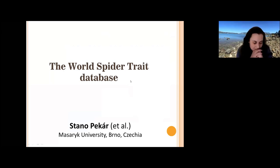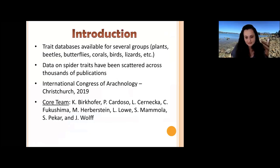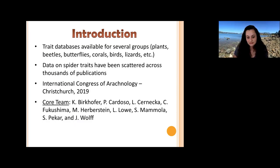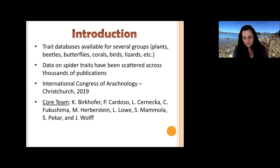With the advent of open science, there has been a growing demand for storing data that we obtain as scientists in a digitalized way. This resulted in the development of several databases — for example, for plants, beetles, and butterflies — which cover a number of traits measured for these organisms. Unfortunately for arachnids, and especially for spiders, no such database has been available, and all the trait data are only available in thousands of publications scattered across the globe in different journals.